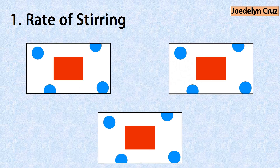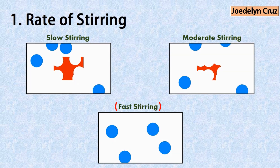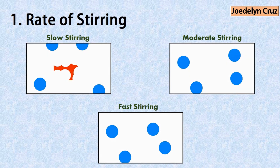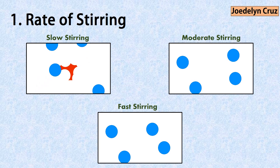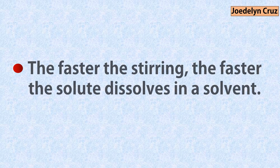Now, let us compare how fast the solute dissolves in a solution that is stirred fast, stirred at moderate speed, and stirred slowly. The solution that is stirred fast dissolves fastest. The solution stirred at moderate speed dissolves next. And the solution stirred slowly dissolves least. This indicates that the faster the stirring, the faster the solute dissolves in a solvent.